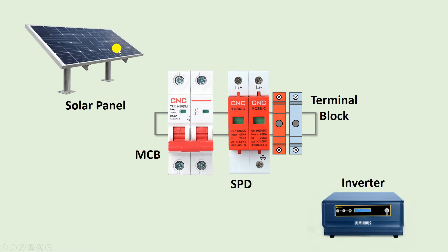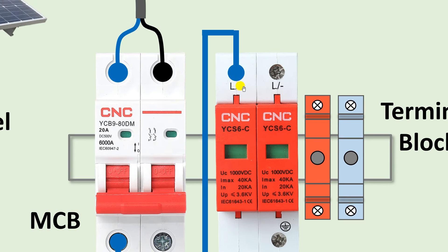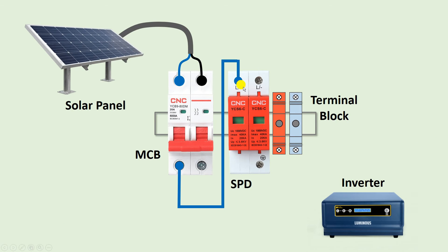For connection of this distribution box, the power supply coming from the solar panel — first of all connect this with the MCB. Connect the positive power supply to the positive terminal of the MCB. From that point, connect a wire to the positive terminal of the SPD — you can see the positive symbol there, so connect positive power supply at that terminal.